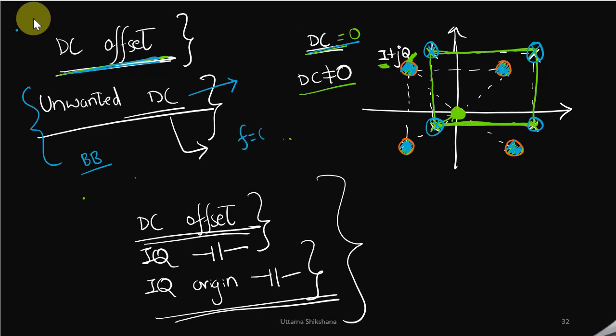Since there is an offset of DC introduced in the signal because of the unwanted component introduced at f equals zero, this impairment is also known as DC offset. Since the constellation points where your IQ sample has got shifted, this impairment is also known as IQ offset. And since it has got shifted at a different location from the origin, even this is also known as IQ origin offset. All of these names correspond to the same concept, so do not get confused.